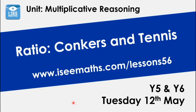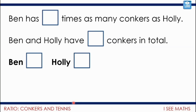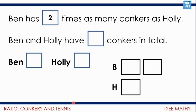Now today we're looking at ratio. Recipes are an example of ratio, and we're going to look at different examples where we have to scale up and scale down — including conkers and tennis. Here's a prompt: Ben has some unknown multiple as many conkers as Holly, but we know Ben has more than Holly. Let's say Ben has two times as many conkers as Holly. The drawing shows that for every two lots of conkers Ben has, Holly has one.